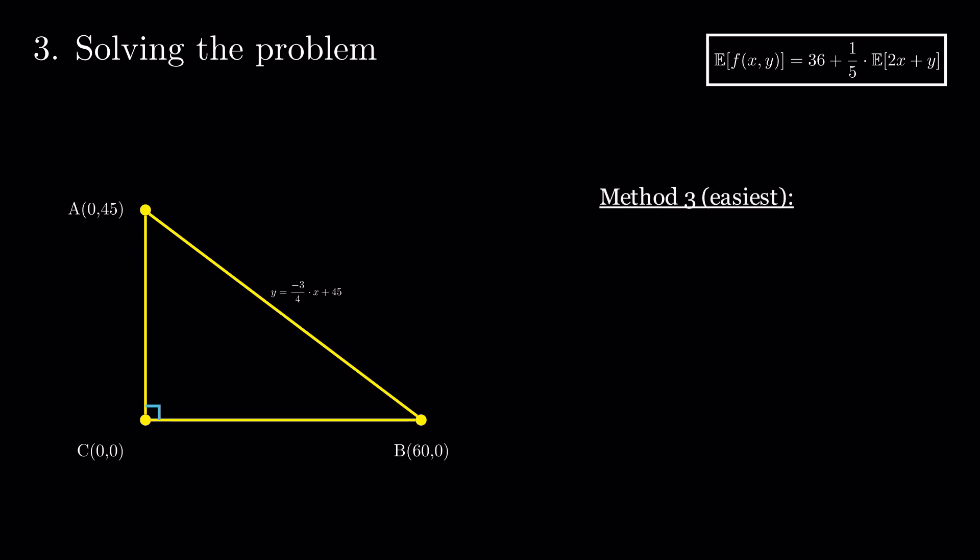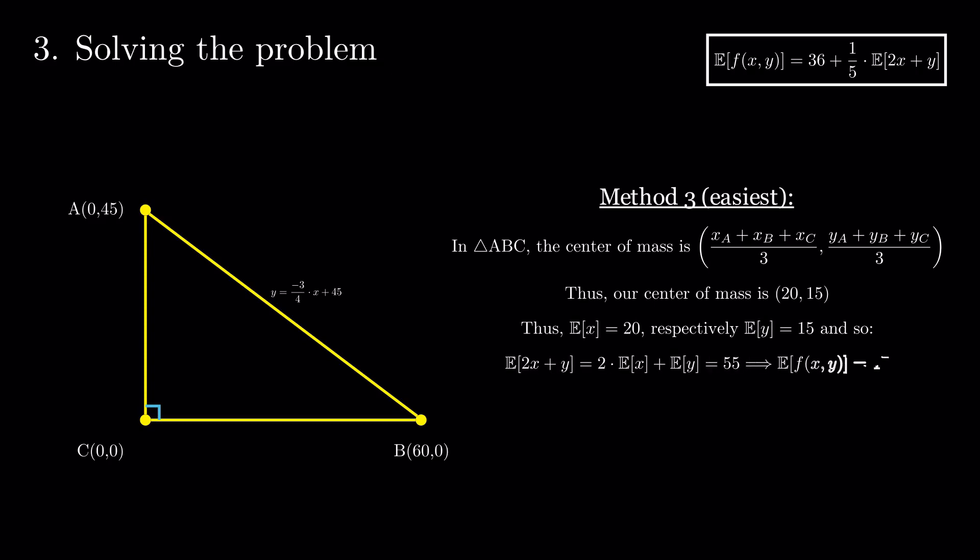But we can be even more clever. Using the center of mass formula, we see that ABC's center of mass is the point 20, 15. This implies that expectation of x is 20 and expectation of y is 15. And we get to our final result, 47, without using any integrals.